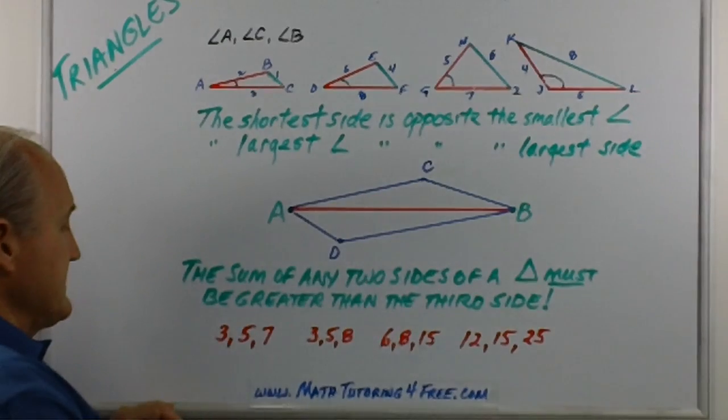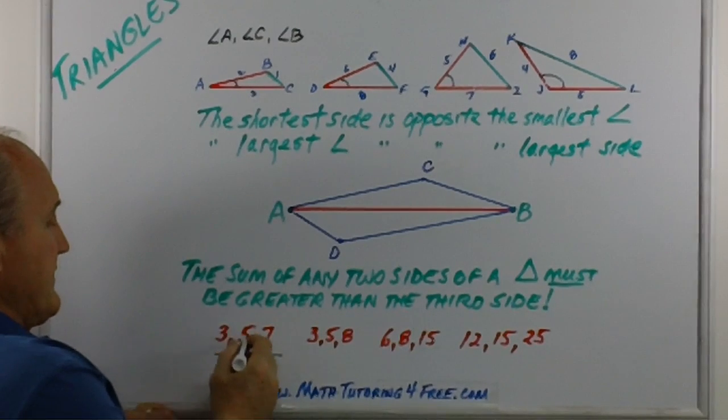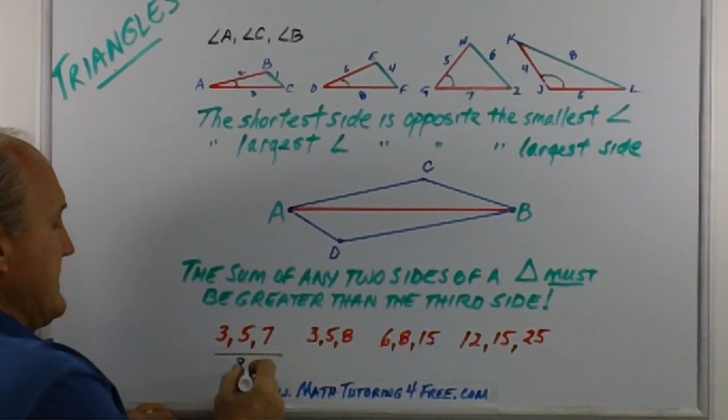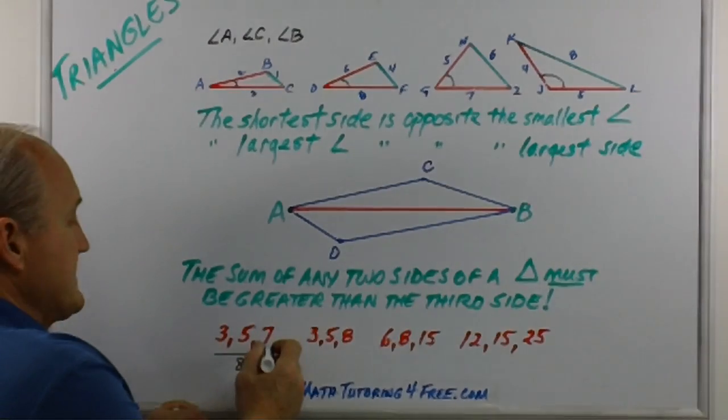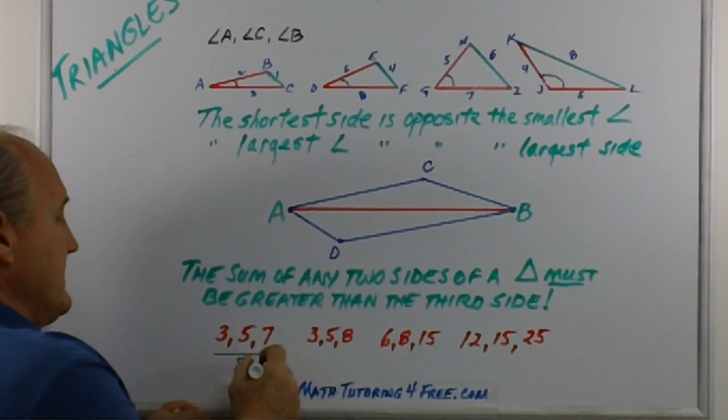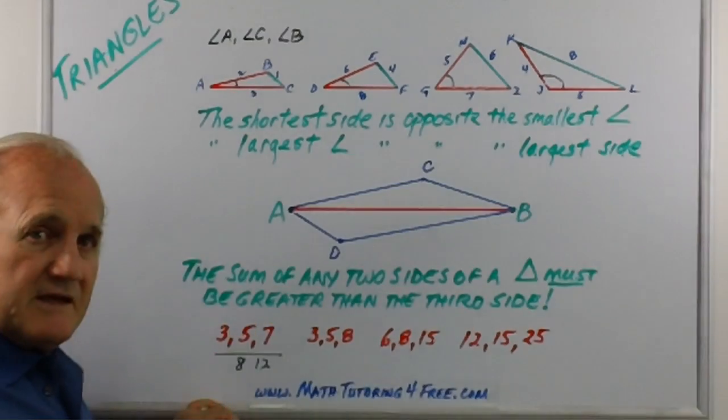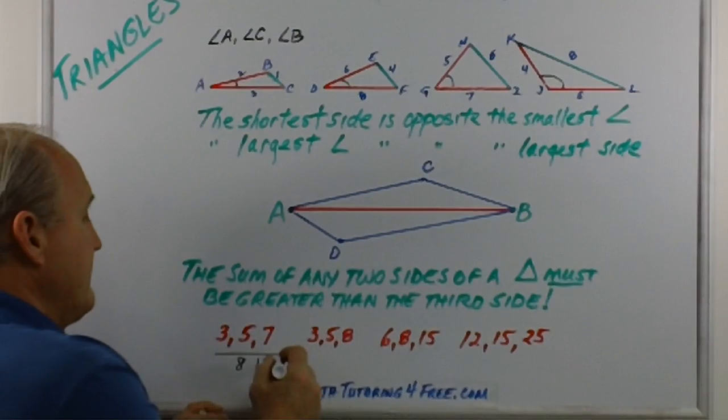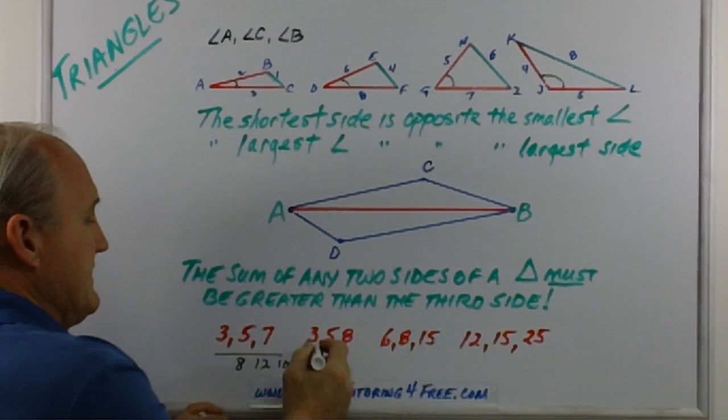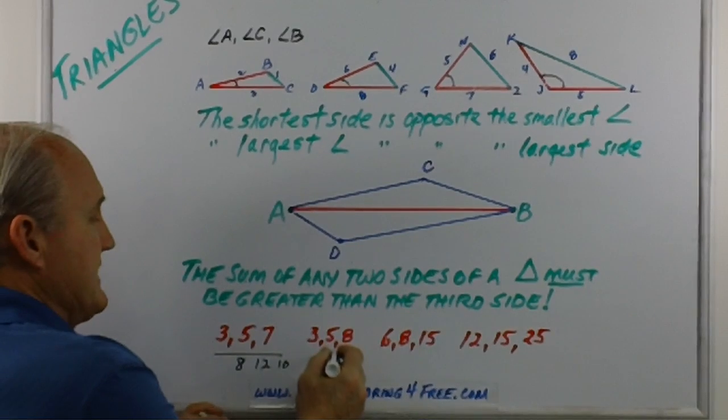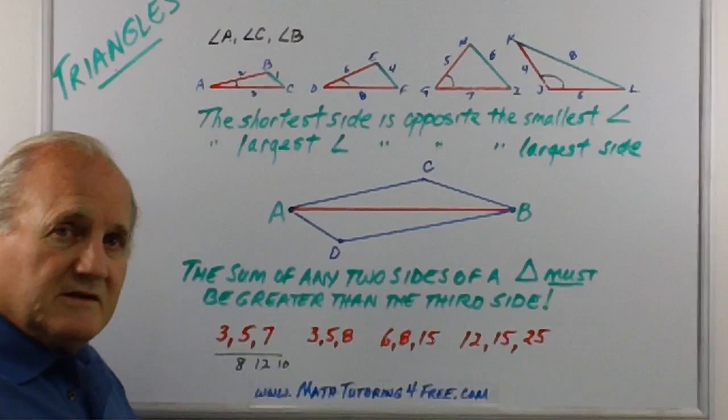Well, again, what you have to recognize is the sum of any two sides must be greater than the third side. For instance, let's look at these sides of this triangle: 3, 5, and 7. If we added 3 plus 5, that's 8—that is longer than 7, so that's valid. 5 plus 7 is 12, it's longer than 3, so that's still valid. 3 plus 7 is 10, 10 is greater than 5, so that balances out.